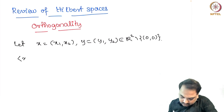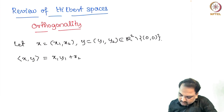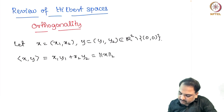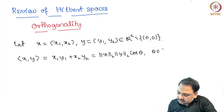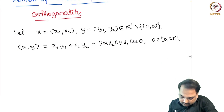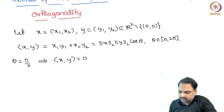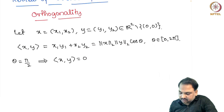We know that the scalar product or dot product of x and y is nothing but x1·y1 + x2·y2, and that is nothing but the Euclidean norm of x multiplied by the Euclidean norm of y multiplied by cosine θ, where θ is between 0 and 2π. We know that if θ equals π/2, this dot product of x with y, or inner product of x with y, is 0, and when the angle between two vectors is π/2, we call them orthogonal vectors or perpendicular vectors.